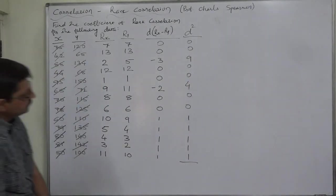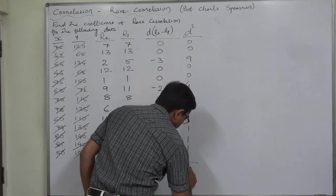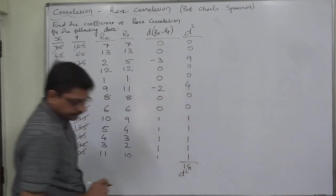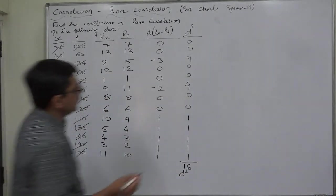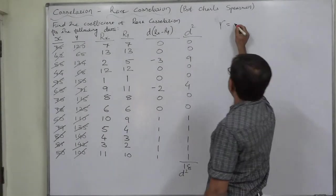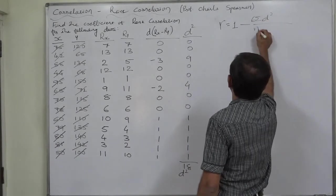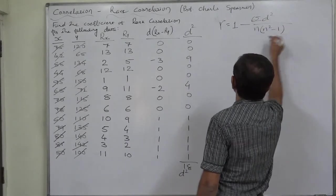Summation 9 plus 4, 13, 14, 15, 16, 17, 18. D square comes to 18. Now, simple formula. The coefficient of rank correlation equals to 1 minus 6 sigma D square upon N into N square minus 1.